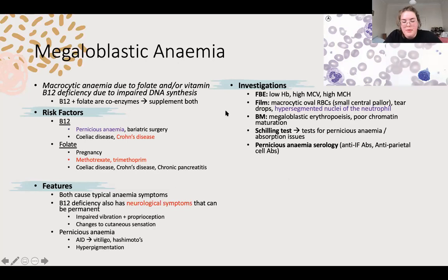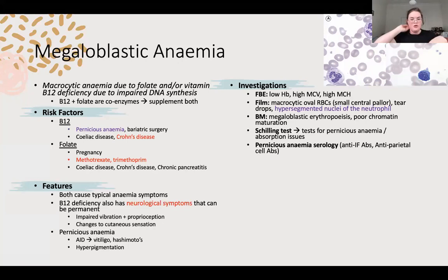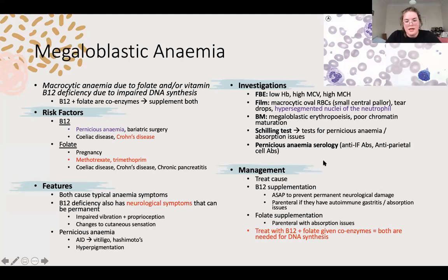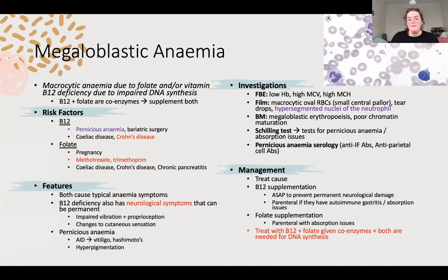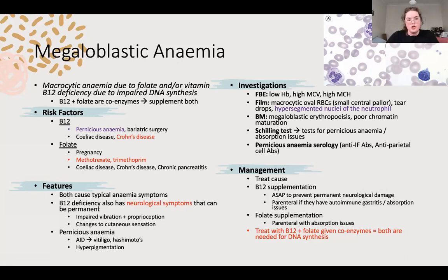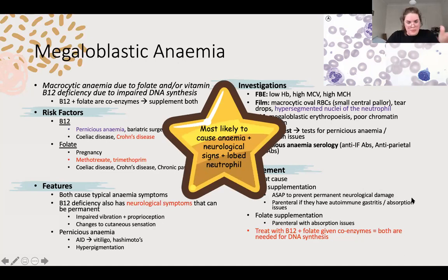Schilling's test uses radio-labelled B12 to see how much is absorbed, telling you if they have pernicious anaemia, an absorption issue, or are normal. You can also look for the antibodies themselves. Management: treat the cause - if it's methotrexate or trimethoprim, stop it if possible. B12 supplementation is important because neurological symptoms can be permanent. Give folate at the same time regardless of cause. If there are absorption issues, give it parenterally - IV or IM injection. Key summary: anaemia, neurological symptoms, lobed neutrophils.